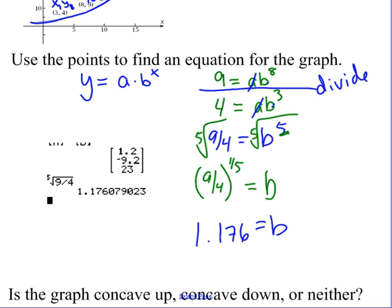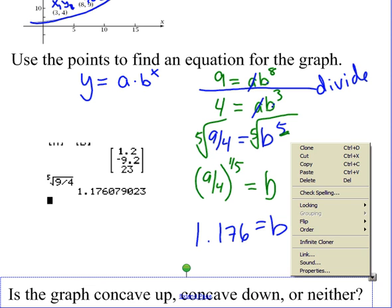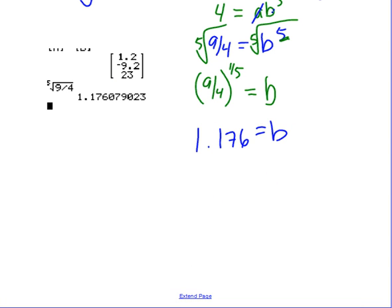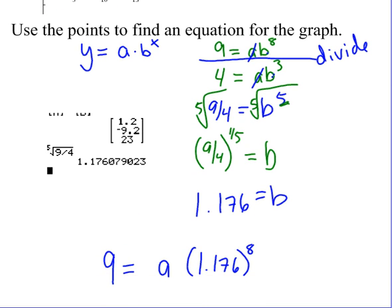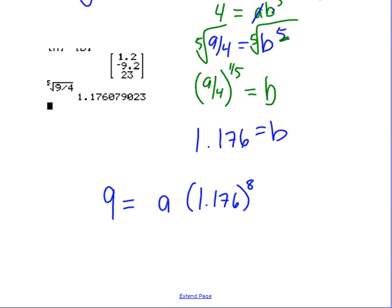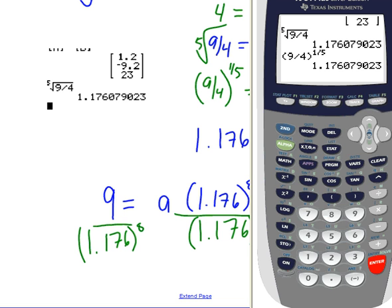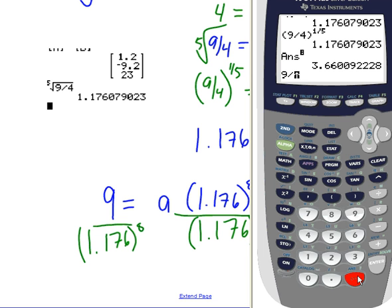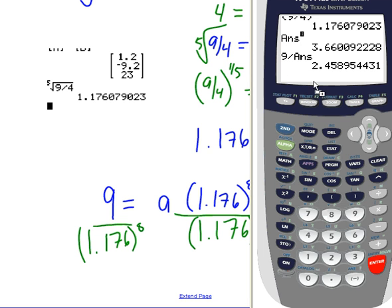And now we can use either equation to solve for a. So when I'm looking at solving for a, I can put it back into the first one. So I have 9 equals a times this number. I'm actually not going to round it. I'm going to leave it in my calculator as is. So I just put it right back here, a times b to the 8th. And I need to solve for a. So basically I just go ahead and take this side and divide it by 1.176 to the 8th. So what I would do here is I would just raise this to the 8th, and then I would take 9 and divide it by my answer. And I get 2.459 for my a value.